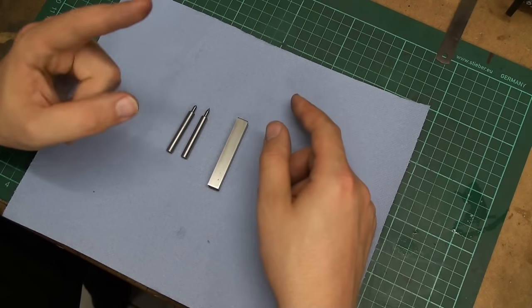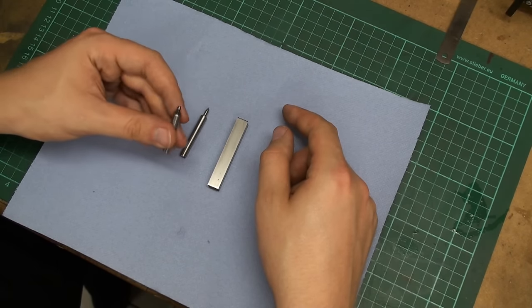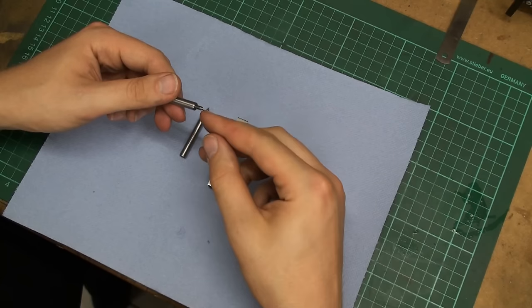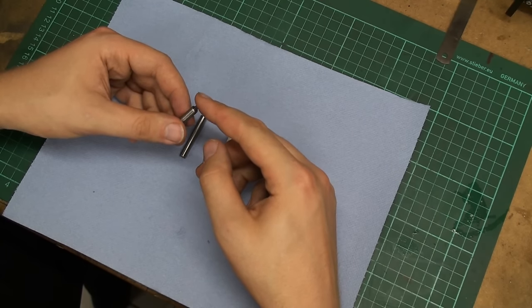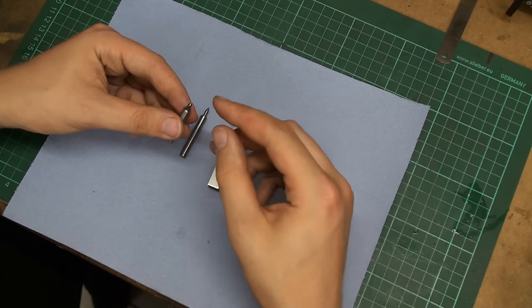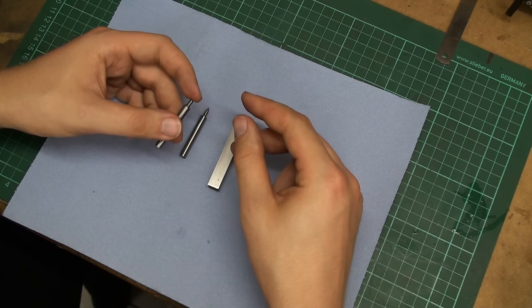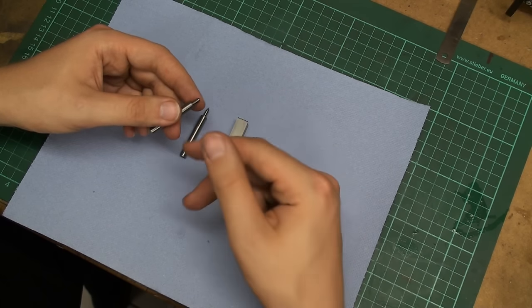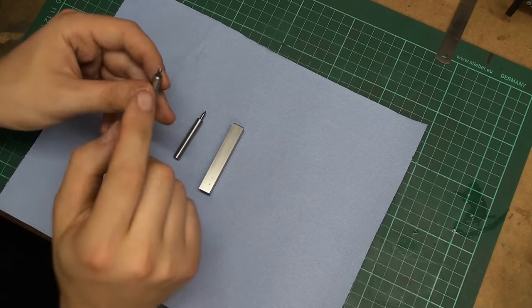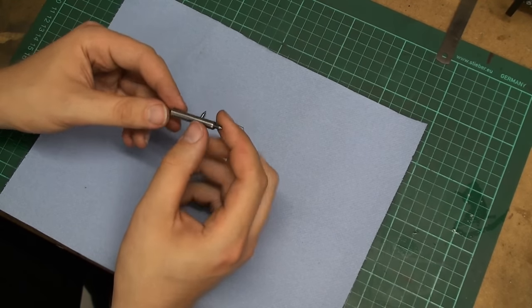If you have seen part one, which I will link right here, you might remember this guy. This is my spring-loaded drag engraving point and I had some problems with the engraving in my last video. The distance between the lines was not consistent. First I was thinking that my template was the reason for that, but I made another template and had the same problem again. Then I figured out that these spring-loaded drag engraving points are the reason for that.